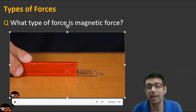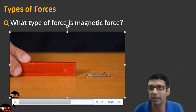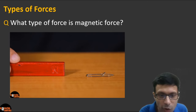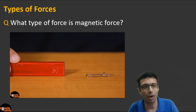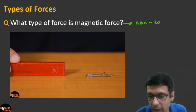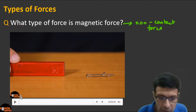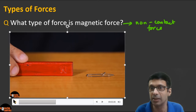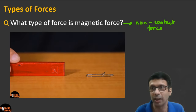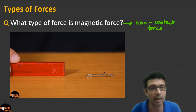What type of force is magnetic force? You can see the magnet is attracting an iron pin towards it. Magnetic force is an example of a non-contact force because the magnet pulled the pin without touching it — the attraction happened while it was still at a distance.